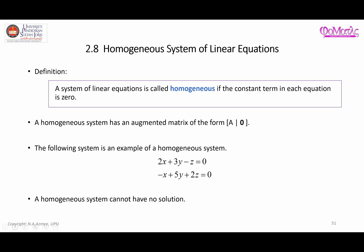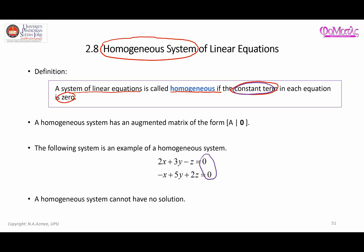In this video I'm going to talk about the idea of a homogeneous system. It is a very simple idea. When you have a system of linear equations, that system is called homogeneous if the constant term in each equation is zero. If you refer to the augmented matrix, the augmented matrix will have this part here be all zero.